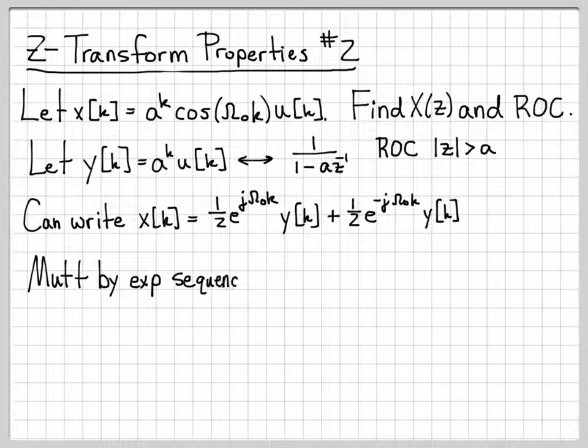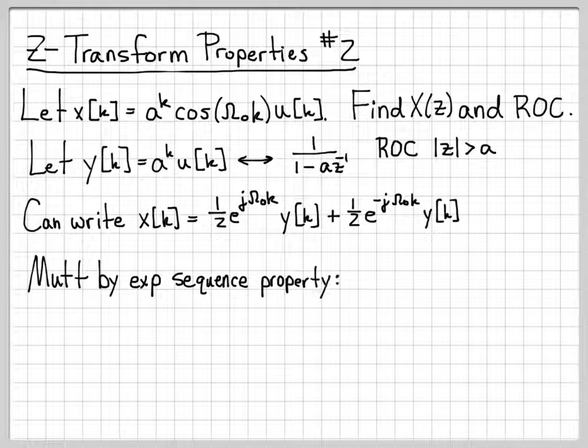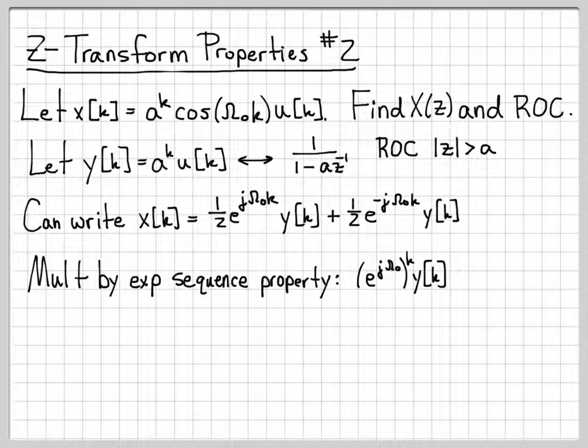The property I'm going to use, the Z-transform property I'm going to use, is the multiplication by an exponential sequence property. Basically, what I have here is e^(jω₀k) times y[k].